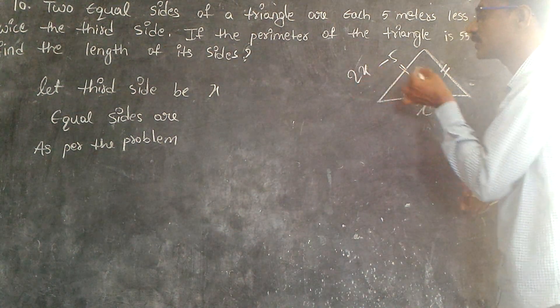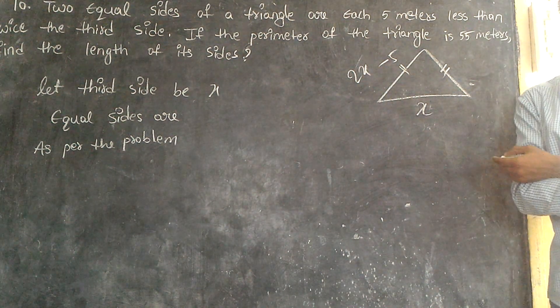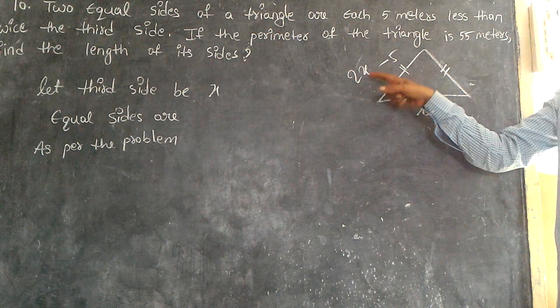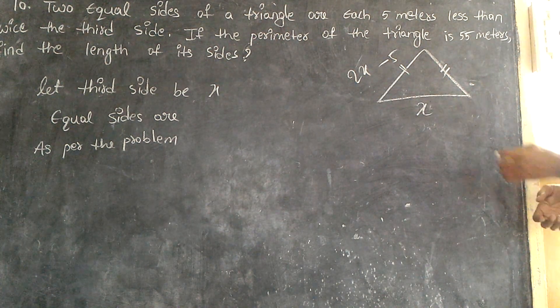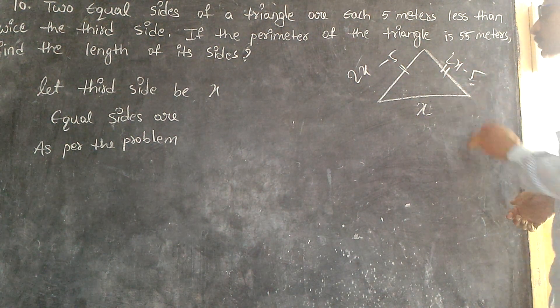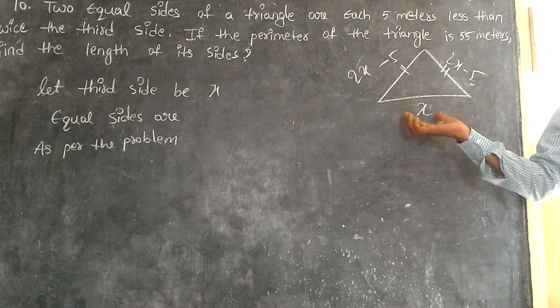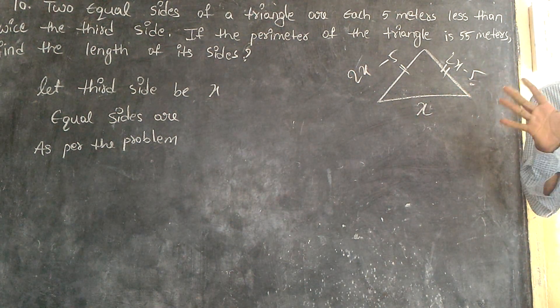Two times. This is 2x minus 5, this is also 2x minus 5. Once again I am telling, here clearly the third side is x.